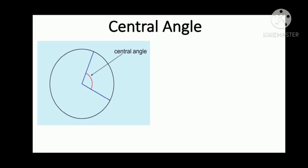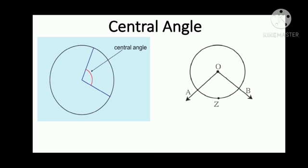Central angle. An angle whose vertex is the center of a circle is called a central angle. In the given figure, O is the vertex of angle AOB.